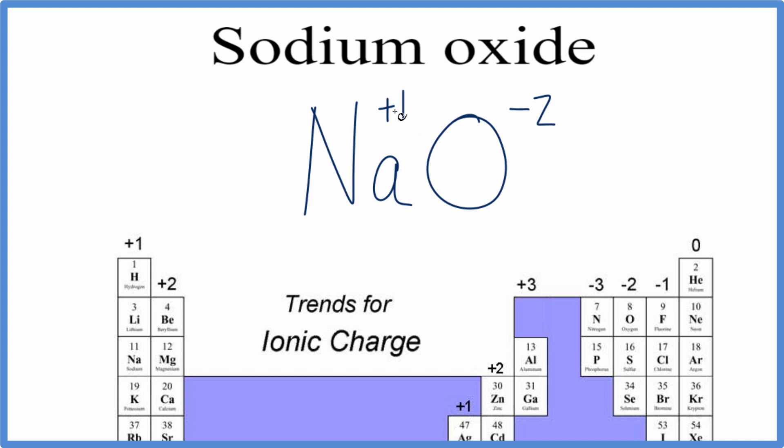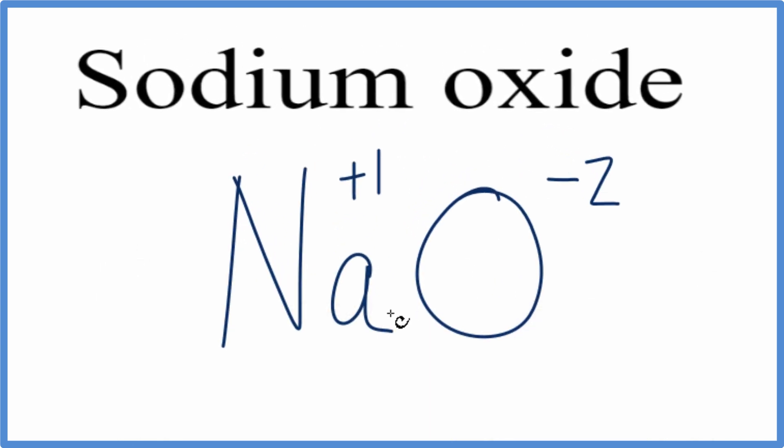So if I have a plus one, and I need to balance out the minus two, I'll need two of these sodiums. Two times plus one, that gives us plus two, and the charges are balanced.